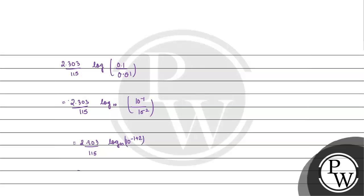Since log₁₀(10) = 1, we have k = 2.303/115 = 1 × 10^-2 per second.